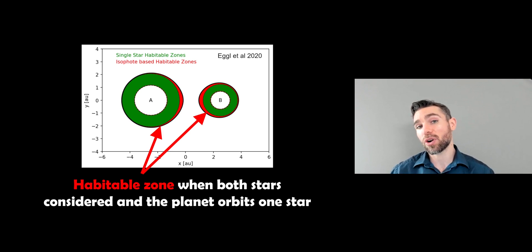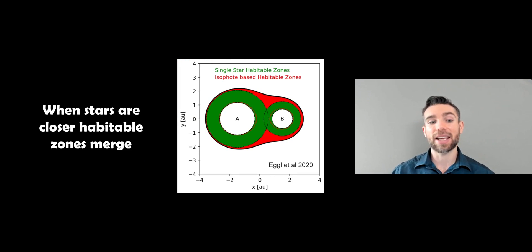Now, if you then move those stars even closer together, it kind of merges into a single habitable zone that is not symmetric in shape. So you can see the green is a single star.